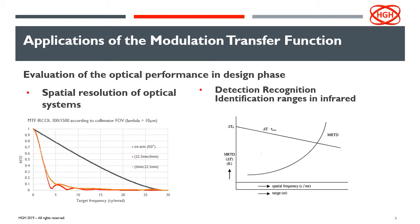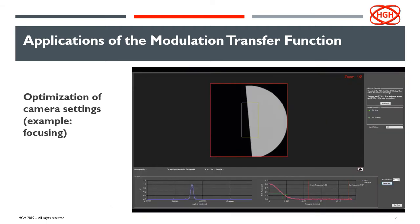Another application of MTF is for detection, recognition, and identification ranges in infrared. We can plot the MRTD curve, which is directly linked to the MTF curve and the NETD values of the camera. By plotting this MRTD on the same graph as the apparent temperature of an object, we can define the detection, recognition, and identification ranges of the system. MTF also enables us to optimize camera settings, for example, focusing.